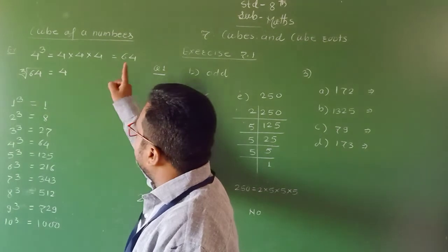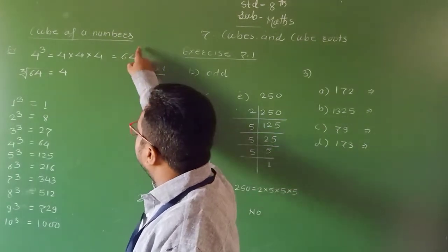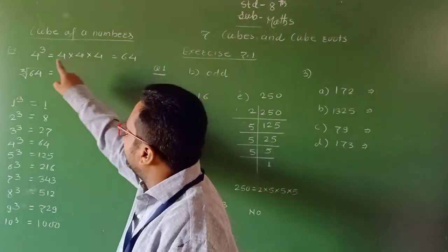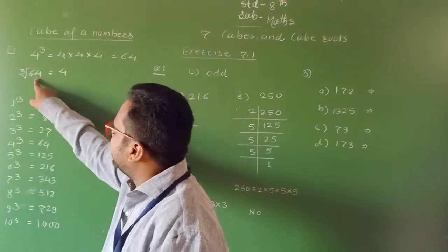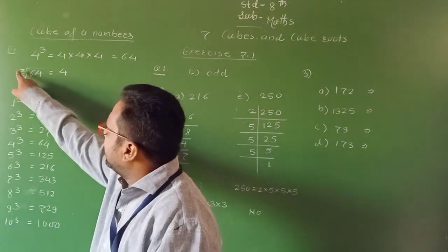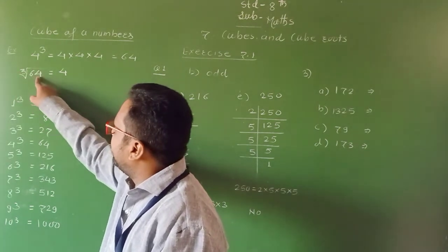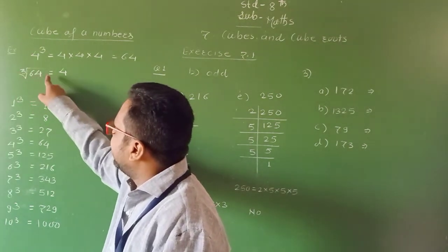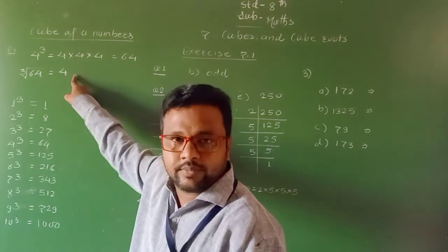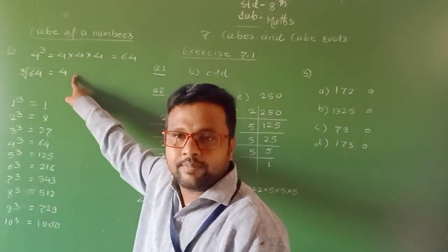And its cube root — this is the perfect cube and its cube root is represented as: the cube root of 64 is equal to 4. This is the answer.